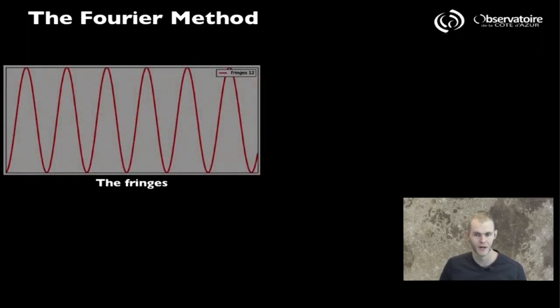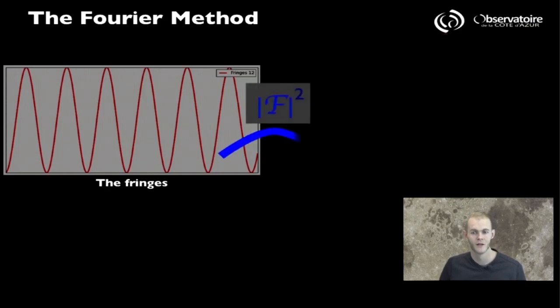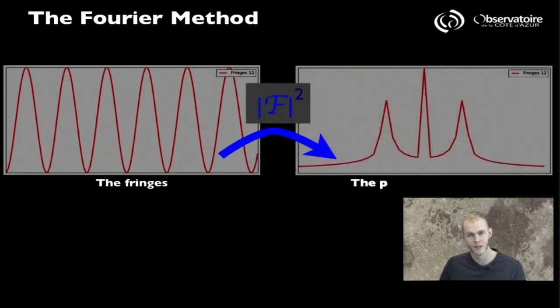Now there are other methods to go about the exact same problem. And that other method relies on an operator that we've encountered a couple of times now, that we call the Fourier transform. Again, we start from fringes, which are simply sinusoidal functions, and instead of directly working on the fringe space, what we're going to do is compute, typically using a pre-made algorithm, what we call the Fourier transform.